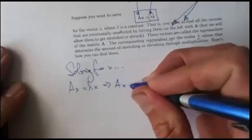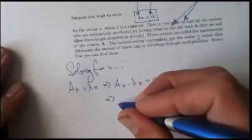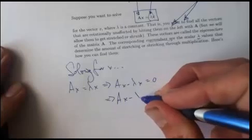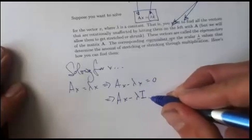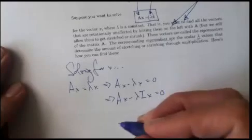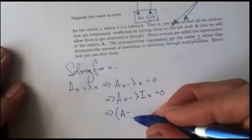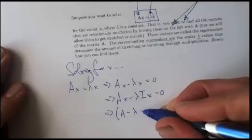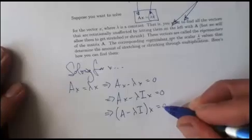This implies that A x minus lambda x equals 0, which implies that A x minus, maybe I'll write this lambda x as lambda times I x, the identity matrix equals 0. That way I can write what's going on here is matrix multiplication, a matrix times x equals 0.